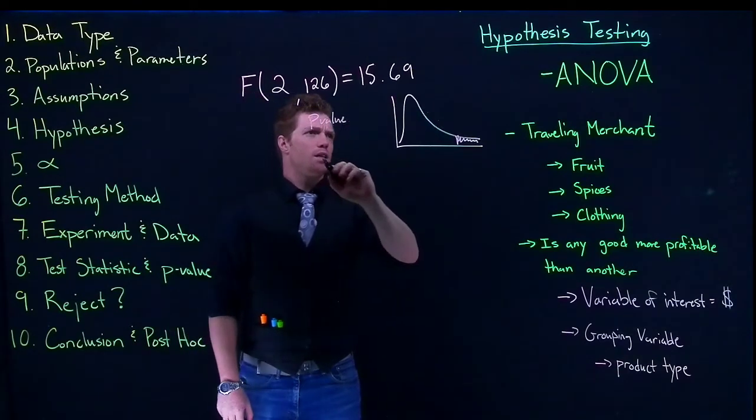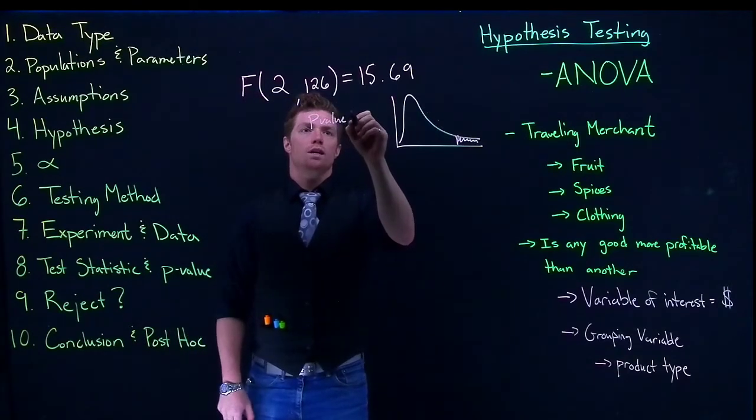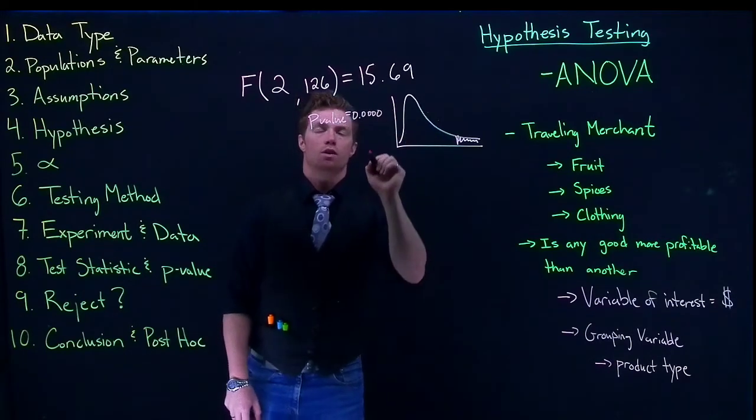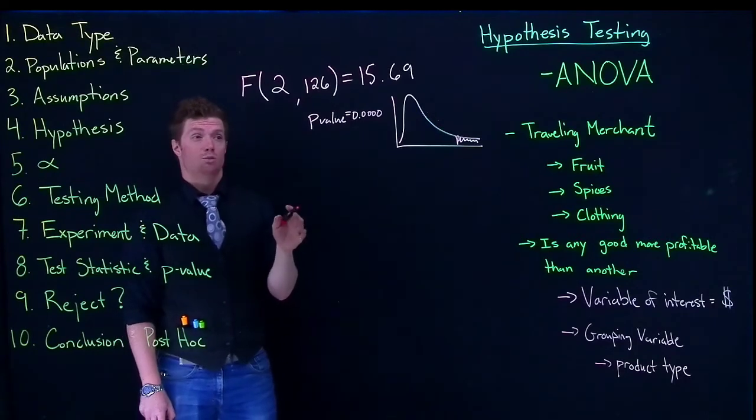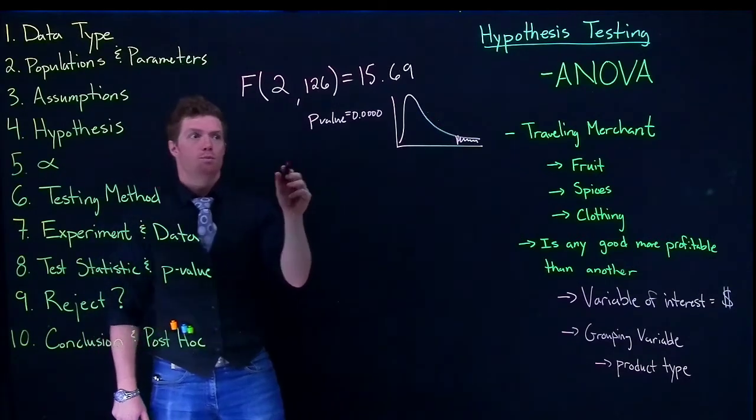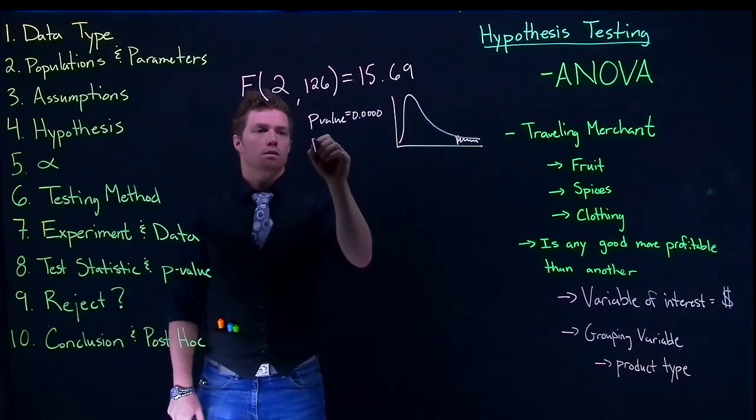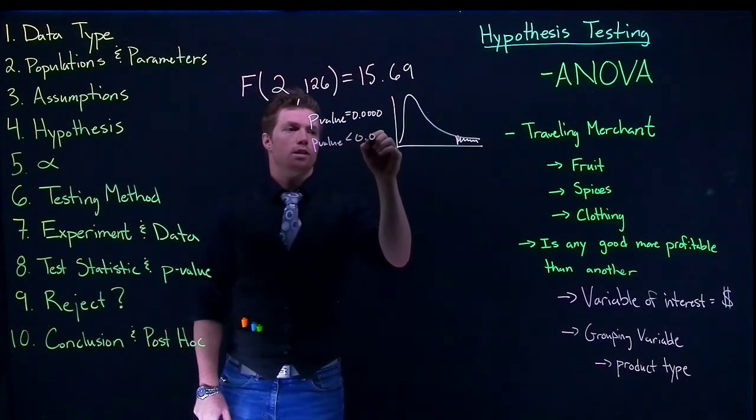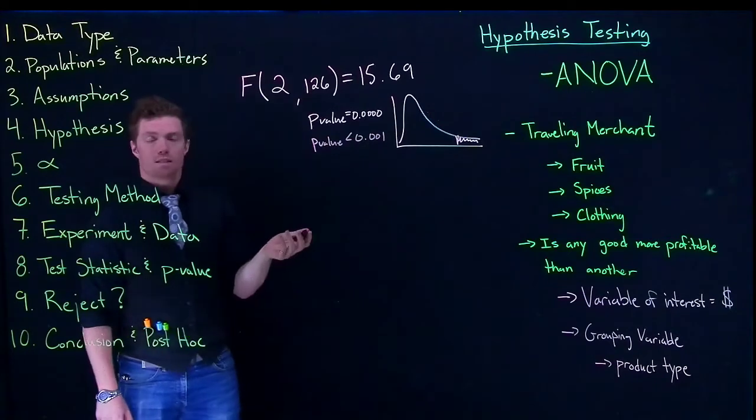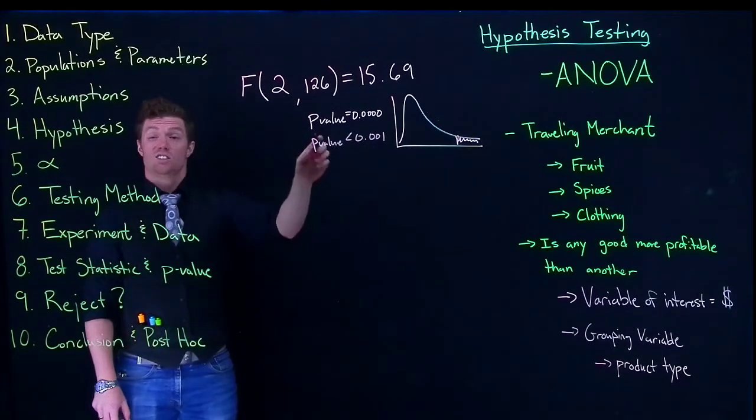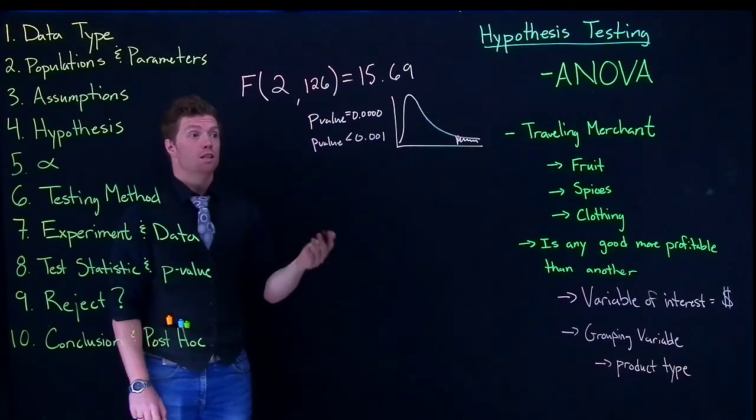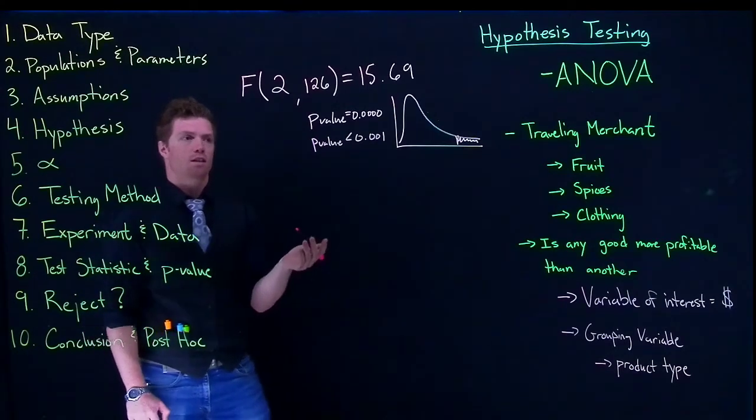And our p-value in this case we'll say is like equal to 0.00000. It's really really small. When this happens we report our p-value as just less than 0.001. So if it's less than 0.001 that's just how you report it. It basically just means that our p-value is really small. We found very significant results.